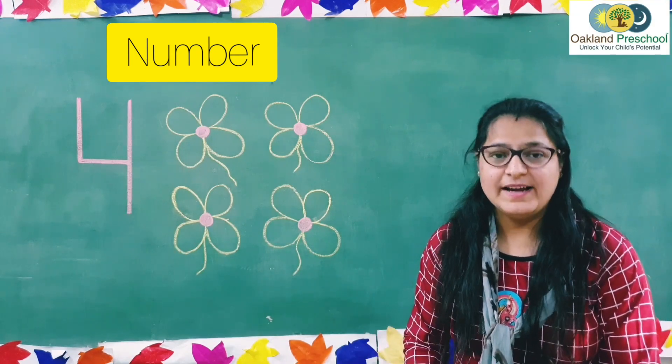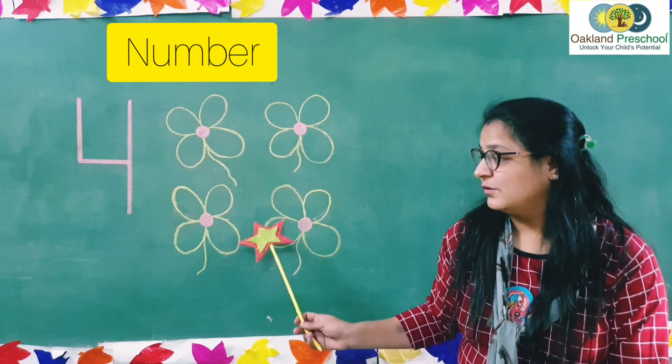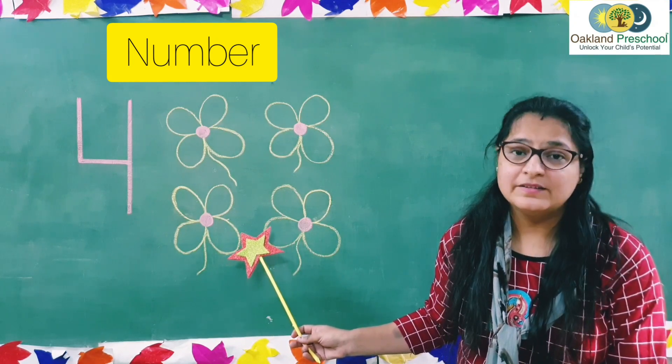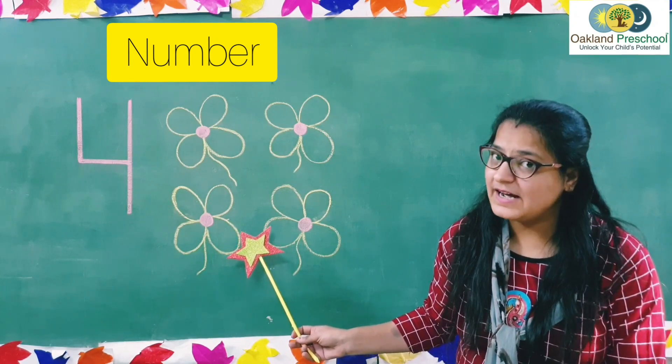Kids, let's try counting. What do you see here? Flowers. What do you see here? Flowers.